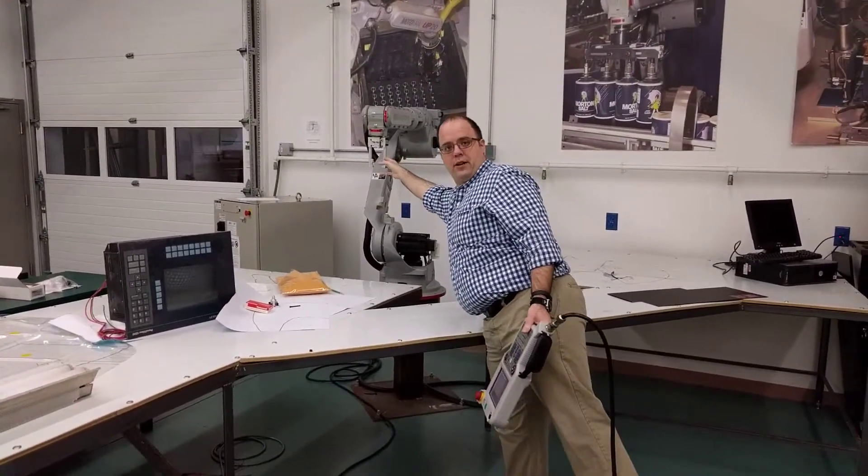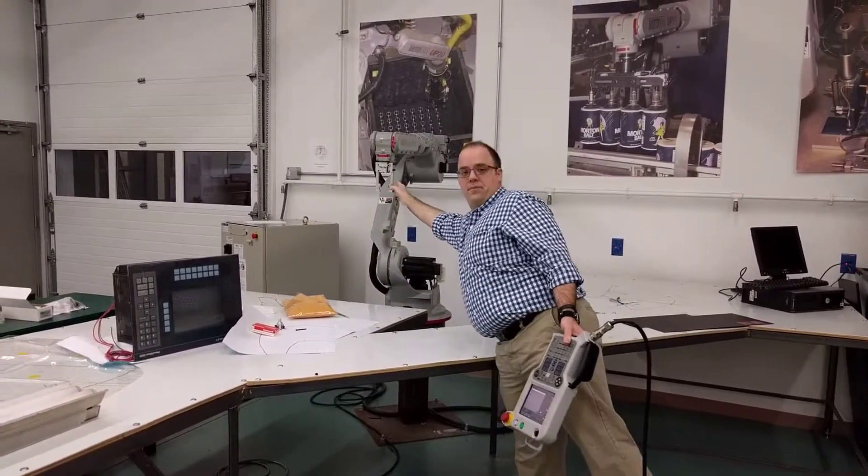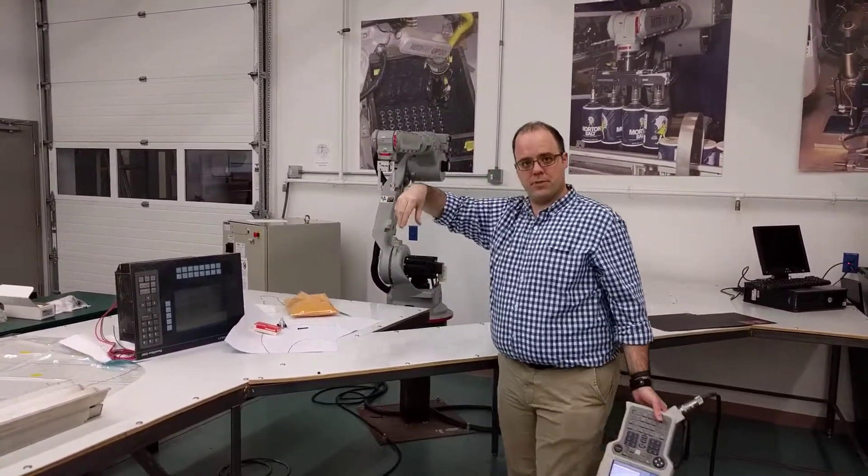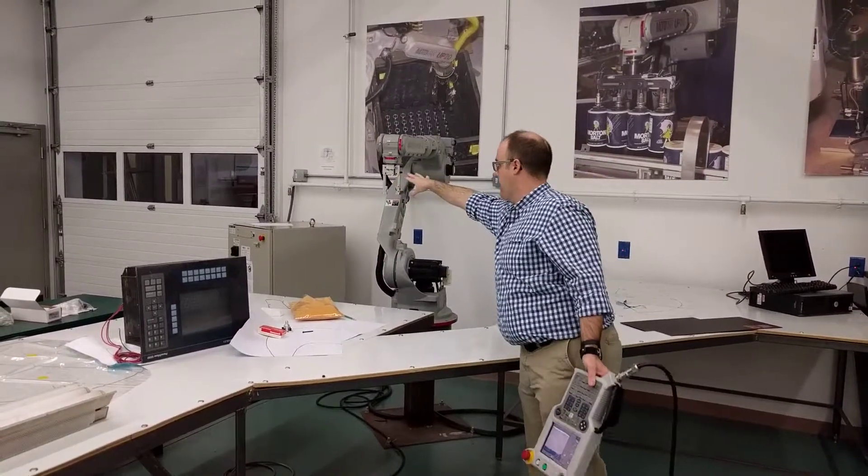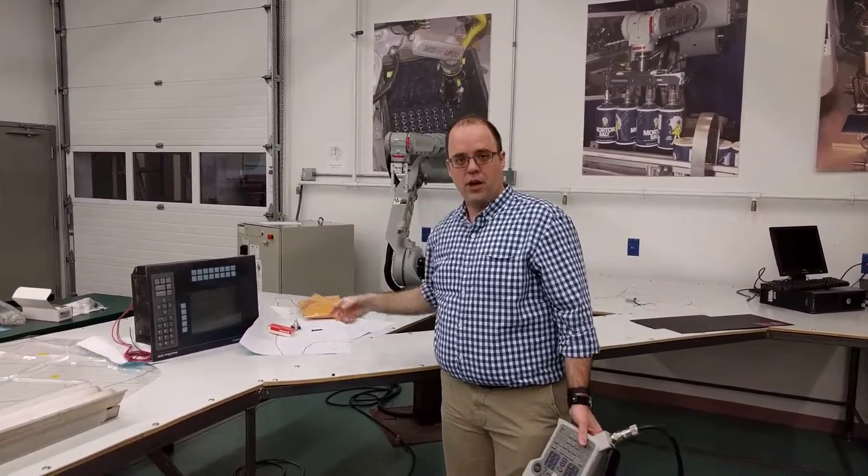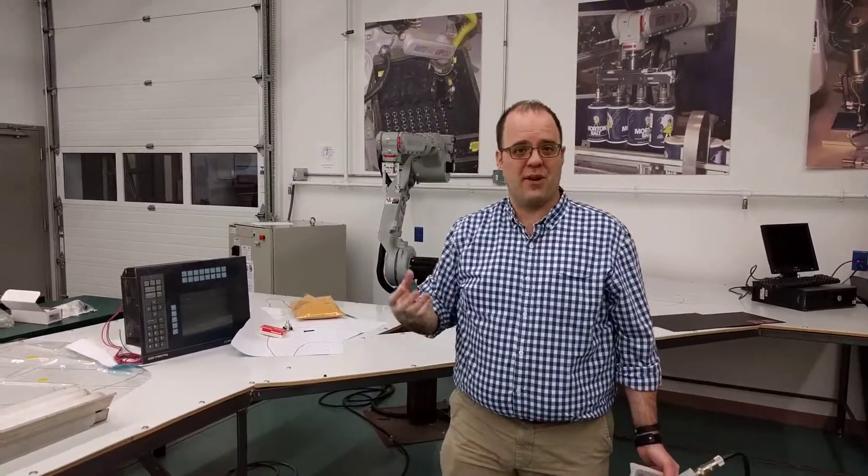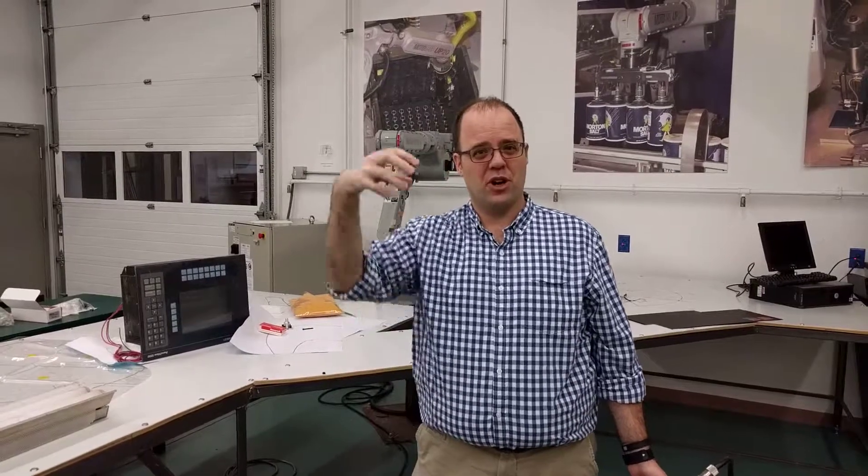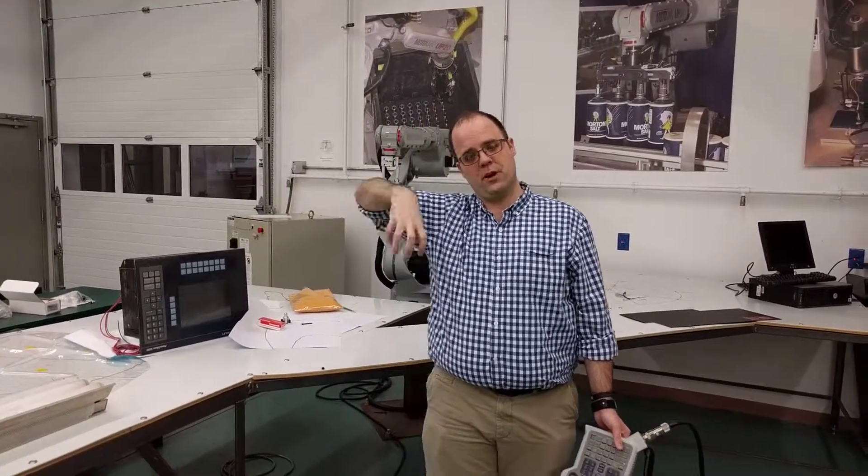Most arms have different types of end of arm tooling that allows them to do different things. This here is a gripper that can be pneumatically controlled, controlled by air tied to controls through the robotic controller. You may see robots that have welding attachments, paint attachments, or giant suction cups that can move material around.